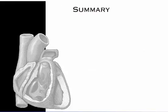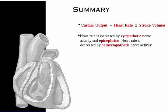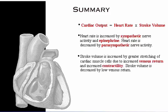Here's a summary of what we've covered. Cardiac output equals heart rate times stroke volume. Heart rate increases with sympathetic nerve activity and epinephrine; heart rate decreases with parasympathetic nerve activity. Stroke volume is increased by greater stretching of cardiac muscle cells due to increased venous return and increased contractility. Stroke volume is decreased by low venous return. To test your knowledge, click the quiz button to go to the self-quiz.